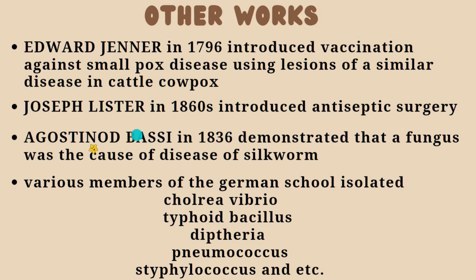Agostino Bassi, in 1836, demonstrated that a fungus was the cause of disease in silkworms. Various members of the German school also isolated microorganisms such as cholera vibrio, typhoid bacillus, diphtheria bacillus, pneumococcus, and others. This concludes the overview of germ theory of disease.